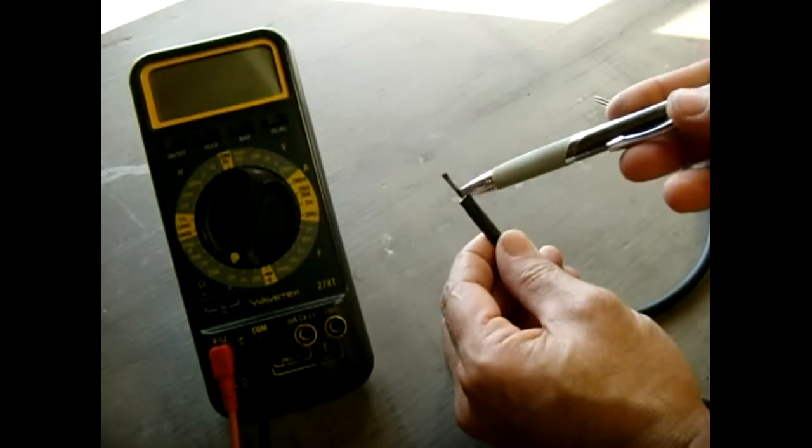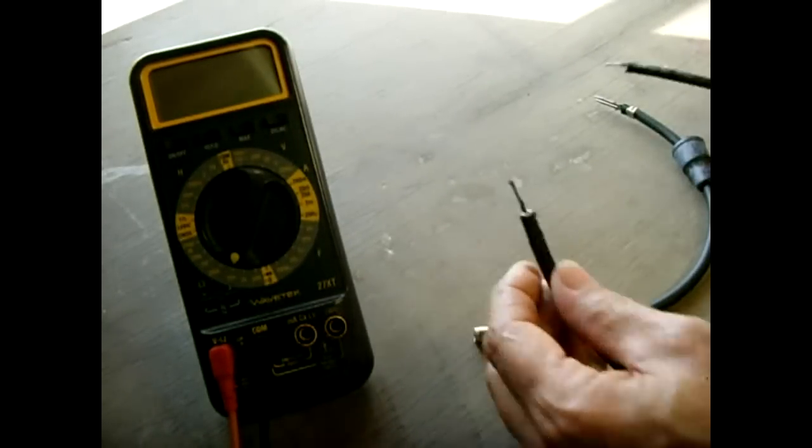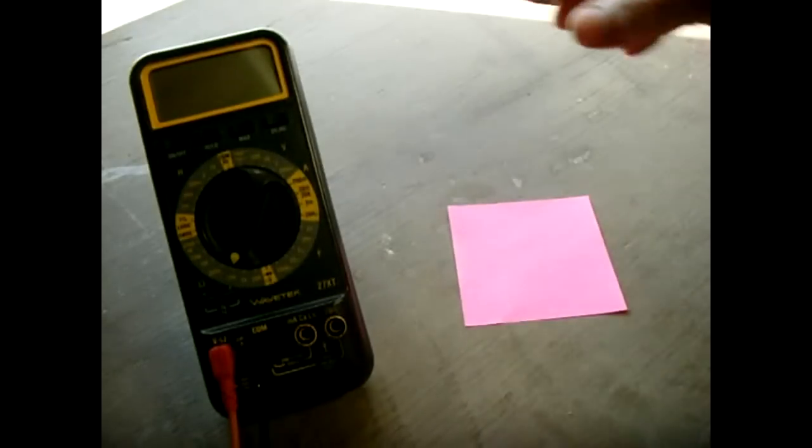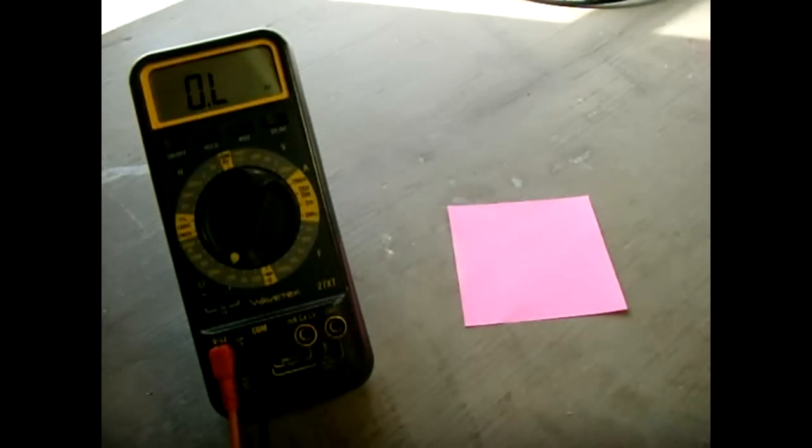I'm going to show you in a simpler way how this graphite works. Let me turn on my digital meter. That's on a 20K ohm range.